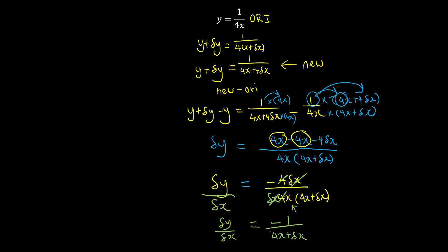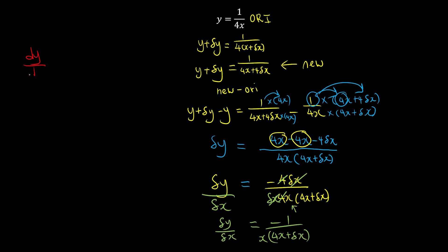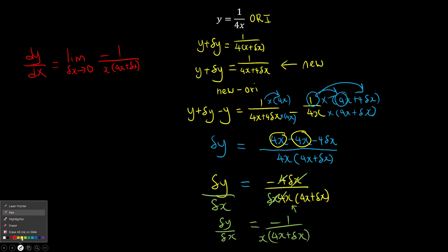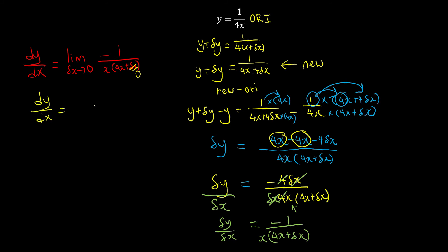Don't forget there is one more x on the outside. But we're not done, because to find dy over dx — the gradient — delta x alone is not good enough. We use the limit where delta x approaches 0: the expression becomes negative 1 over x·(4x plus delta x). As delta x approaches 0, we are left with dy over dx equal to negative 1 over (x times 4x), so we conclude dy over dx equals negative 1 over 4x squared.